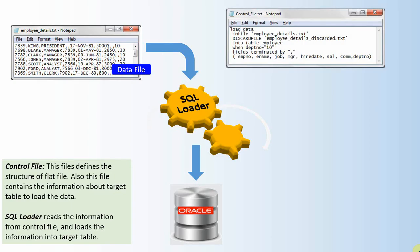For example, the name of the source file must be given in the control file, along with how the source file is formatted — for example, in this case it is a comma-separated file — and what the target table should be. You specify all this metadata information in the control file.